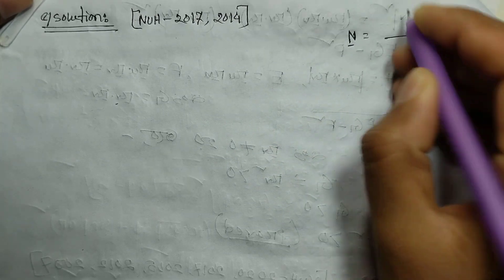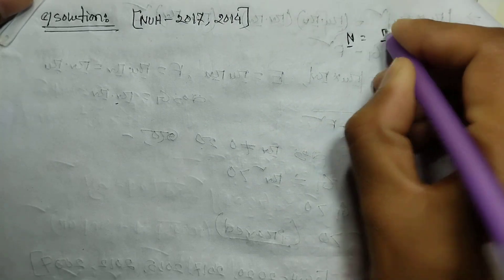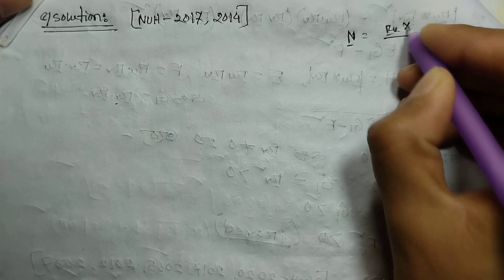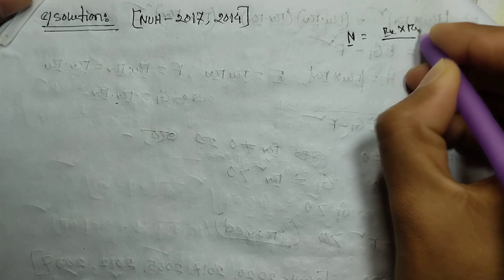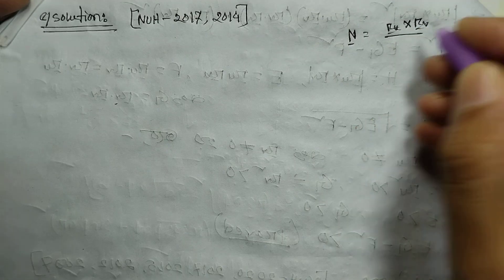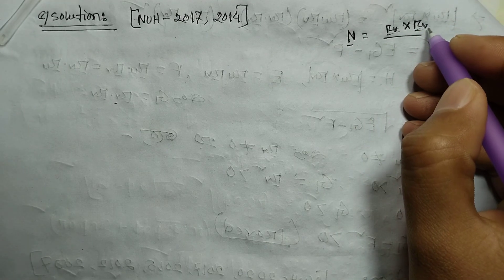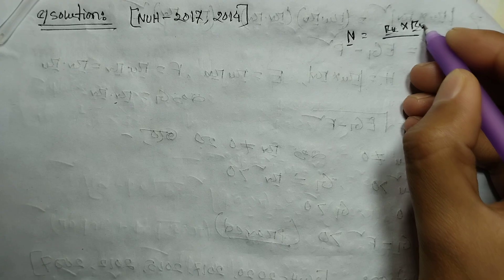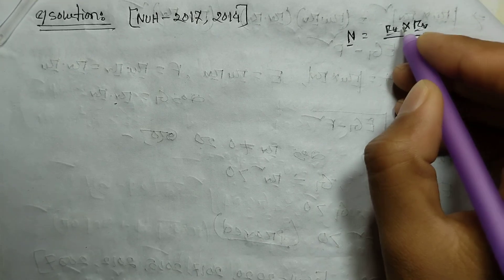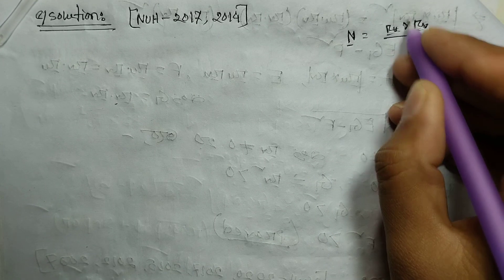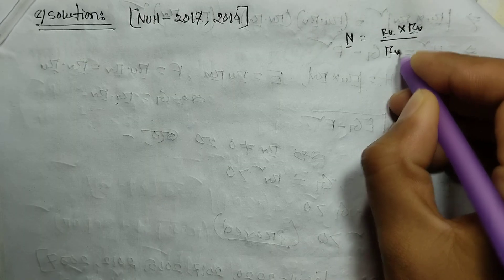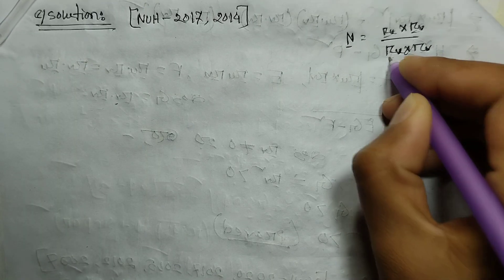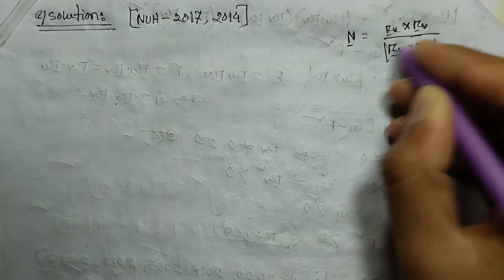We compute r sub u and r sub v. Here r sub v — v is the same parameter. We take the partial derivative with respect to u and with respect to v in order to find the normal vector n.